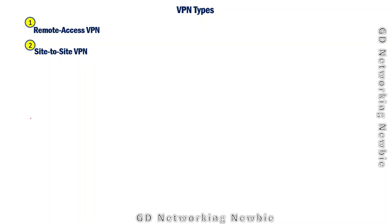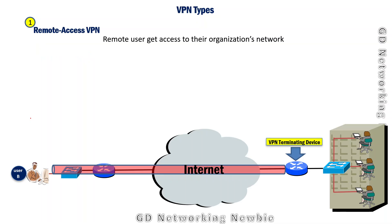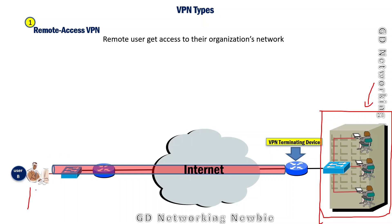In remote access VPN, suppose we have an organization and some employees are working remotely — working from home. If they want to access the private network of the organization remotely, they can establish a VPN tunnel from their location to the organization's private network. This virtual tunnel helps them send information securely. Those clients need to have VPN software installed on their computers, smartphones, or laptops.